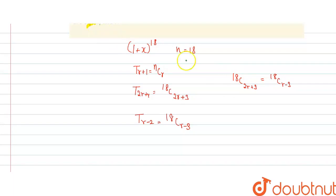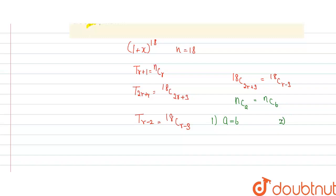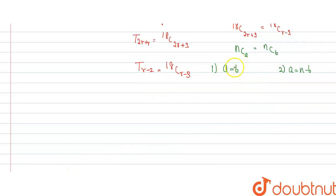Now we know the property which says that if NCA equals NCB, then two cases are possible. The first case is that A is equal to B, or the second case is that A is equal to N minus B. So we'll apply both of these operations.